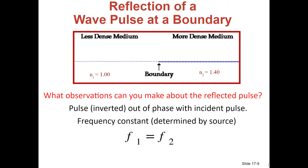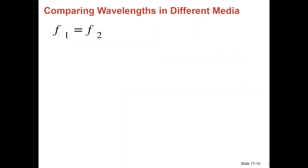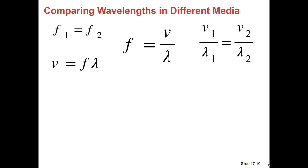Since frequency doesn't change, let's derive some equations comparing wavelengths in different media. We know the relationship V equals frequency times wavelength, so frequency equals V over lambda. The frequency in medium 1 equals the frequency in medium 2, so we can set V1 over lambda1 equals V2 over lambda2. This gives us a relationship between the wavelengths in different media compared to their speeds.